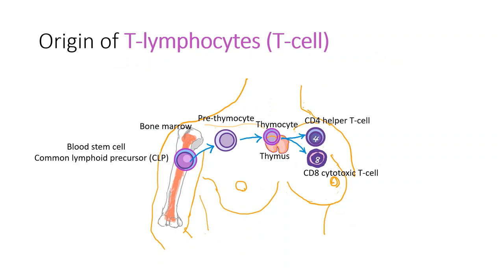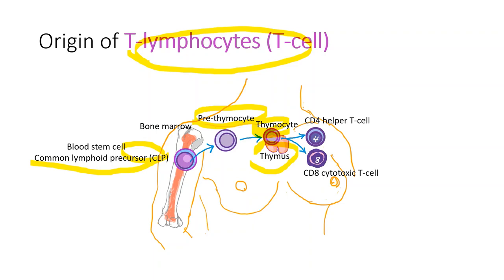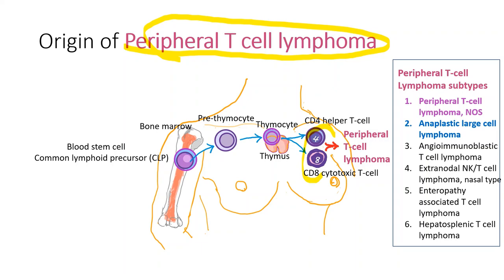T cells also originate from the bone marrow as common lymphoid precursor cells. Leaving the bone marrow as pre-thymocytes, they enter the thymus and become thymocytes, then differentiate into CD4 helper T cells and CD8 cytotoxic T cells. Peripheral T cell lymphoma originates from activated T cells, like CD4 or CD8.